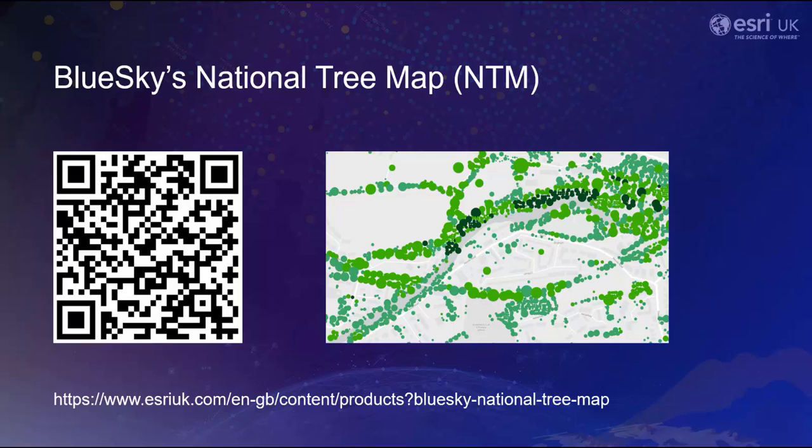BlueSky's national tree map is the most detailed data set of its kind ever produced. With coverage across the whole of England, Wales, Scotland and the Republic of Ireland, the national tree map provides a unique comprehensive database of tree locations. This data contains attributes of the trees' height, canopy and crown extents for every single tree that is 3 meters or above in height. It is created from high resolution national aerial photography, accurate terrain and surface data, and color infrared imagery.